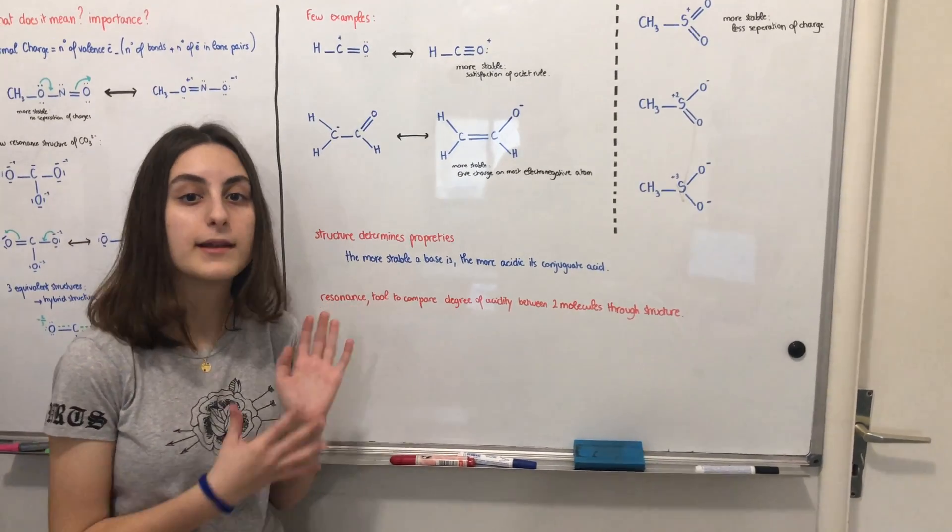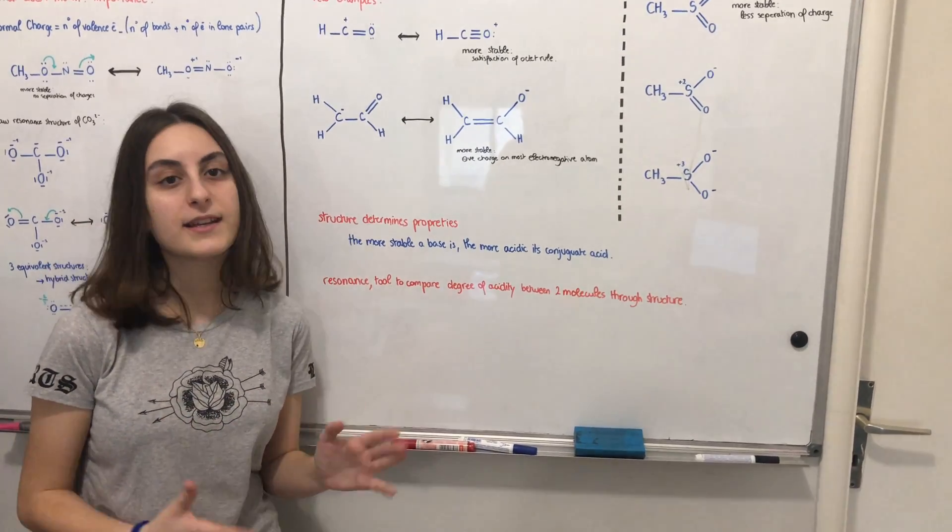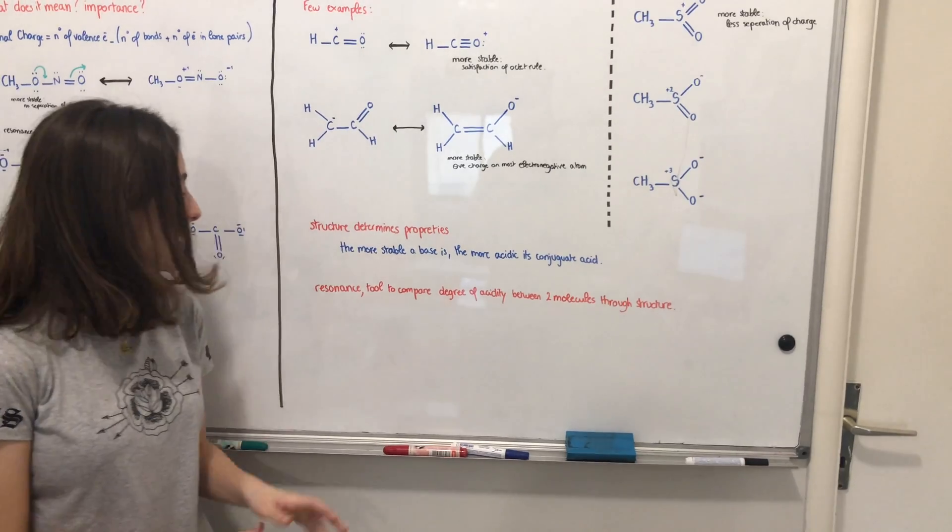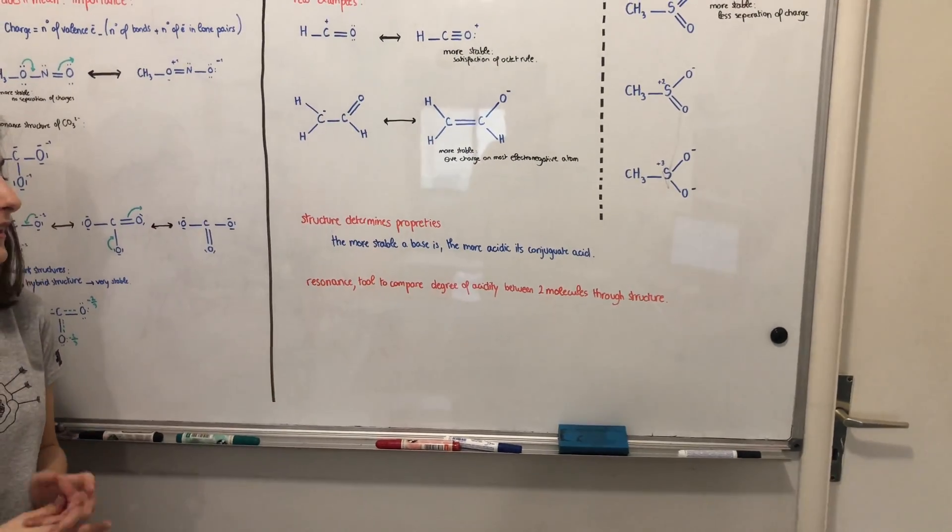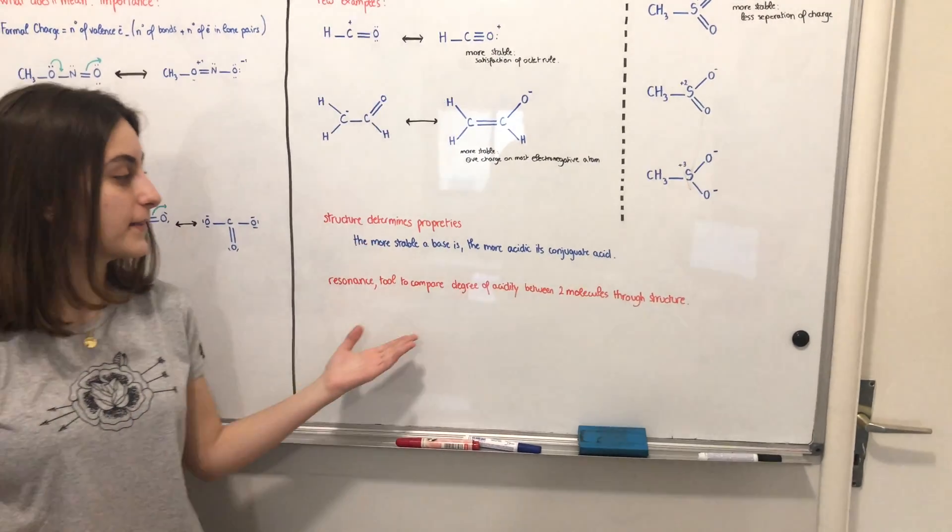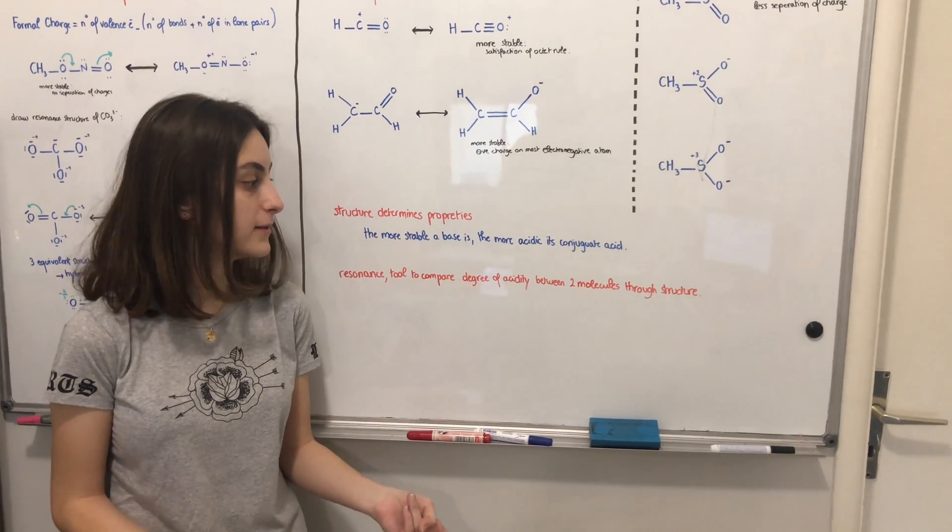The more stable, for example, a base is, the more acidic its conjugate acid. So resonance can be a tool to compare the degree of acidity between two molecules through structure.